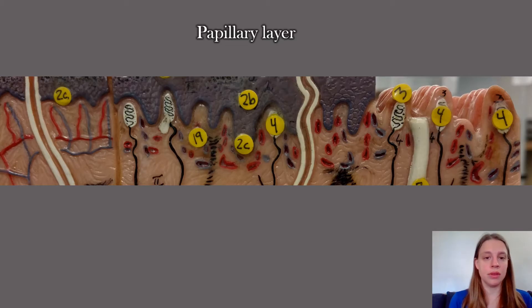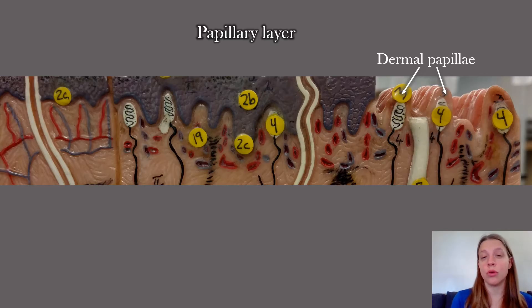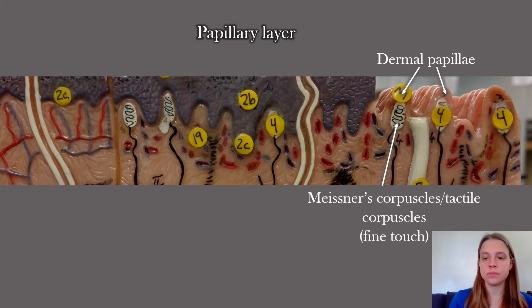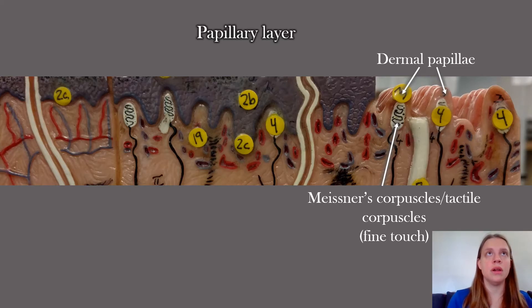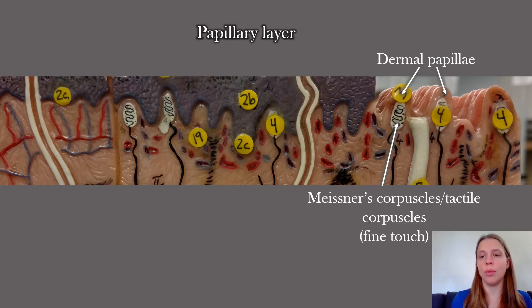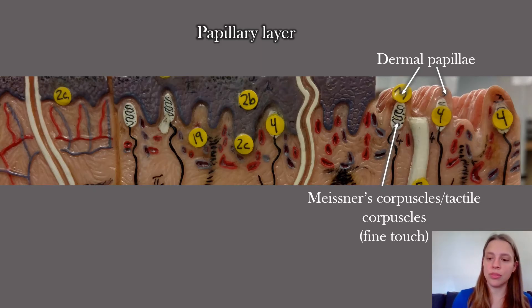The papillary layer is called the papillary layer because it contains dermal papillae. Whenever you see the word papilla, it means a little nub, so all of those little nubs are the dermal papillae. Inside them are tactile corpuscles, which allow you to have discriminatory touch — they're what allows you to detect the texture of an object. You have the highest concentration of dermal papillae in your hands, which is why it's easier to determine the texture of something when touching it with your hands as opposed to, say, your elbow.